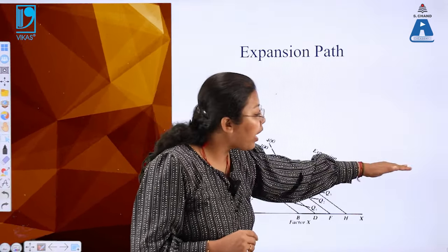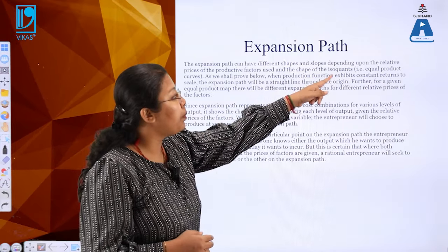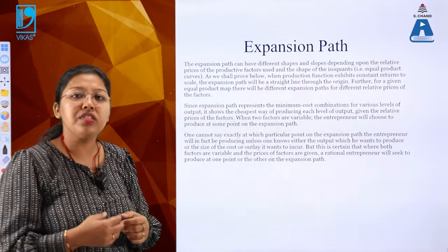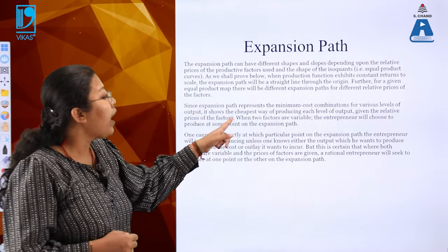The expansion path is always supposed to expand - it will not move downward and at most may go in a straight line, which is called the scale line for the entrepreneur. It can have different shapes and slopes depending upon the relative price of productive factors. It also represents the minimum cost combination, where as a rational producer you maximize profit and minimize cost.